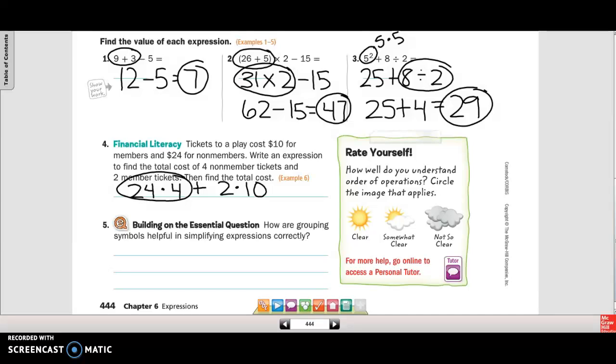So I'm going to multiply that side, and then I'll multiply this side. I'm going to start with that side. I'm going to do 24 times 4, so I have 96 plus 20, and that equals $116.